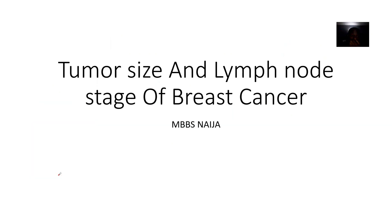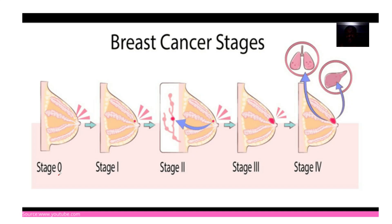We're talking about the aspect of tumor size and lymph node stage of breast cancer. We're looking at how you can use tumor size — how big a tumor is — and also whether the lymph nodes are affected, to determine which stage a breast cancer is at. This is useful for staging tumors in breast cancer. We've already spoken about the TNM staging system — T is tumor, N is nodes, M is metastasis.